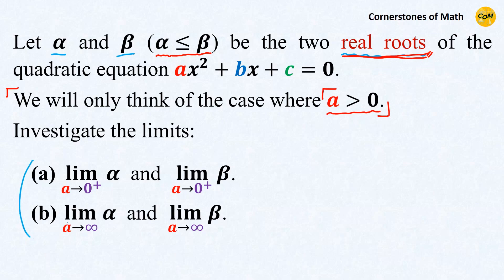We have to investigate the limits of these roots alpha and beta. The first problem is the case where a approaches 0 from the positive side, because we have stated that we are only dealing with the case where a is positive. The second problem is the case where a goes to infinity.